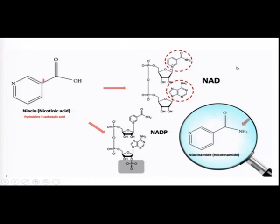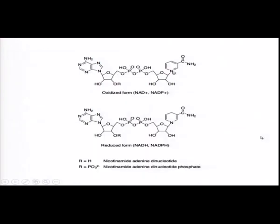NAD and NADPH are the two counterparts — the oxidized and reduced forms — without which cellular functions concerned with energy metabolism in mitochondria cannot happen. The oxidized forms are NAD⁺ and NADP⁺, and the reduced forms are NADH and NADPH. These are nicotinamide adenine dinucleotide and nicotinamide adenine dinucleotide phosphate — a phosphorylated version.